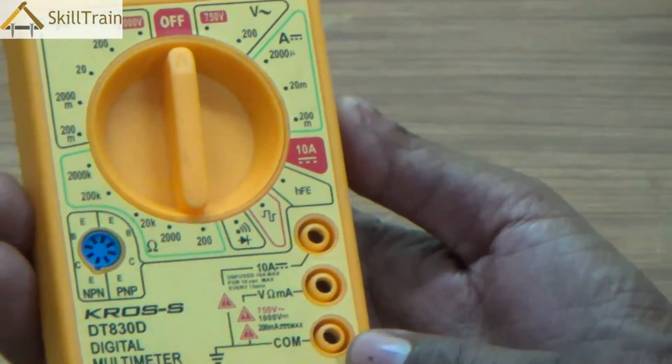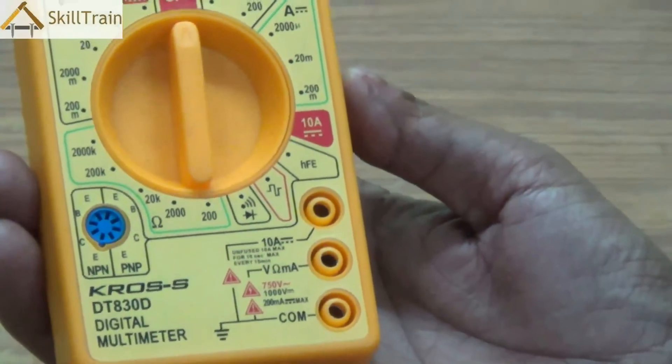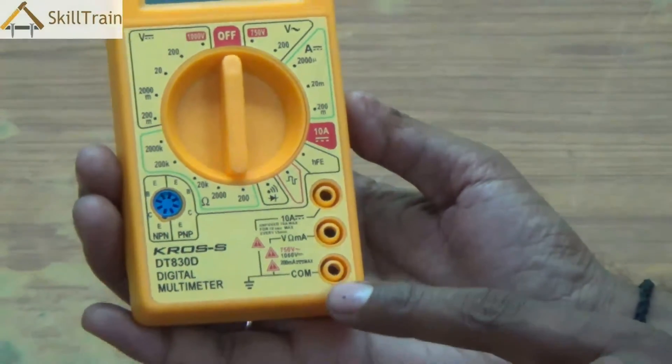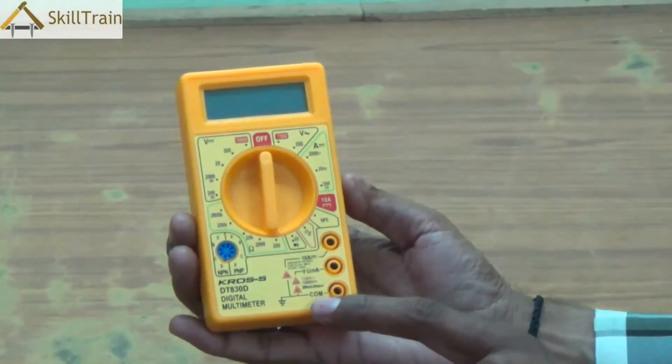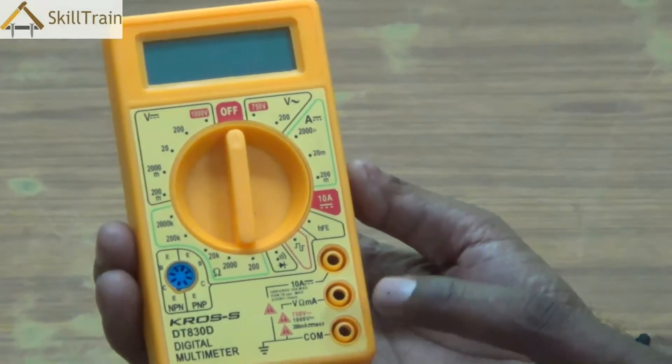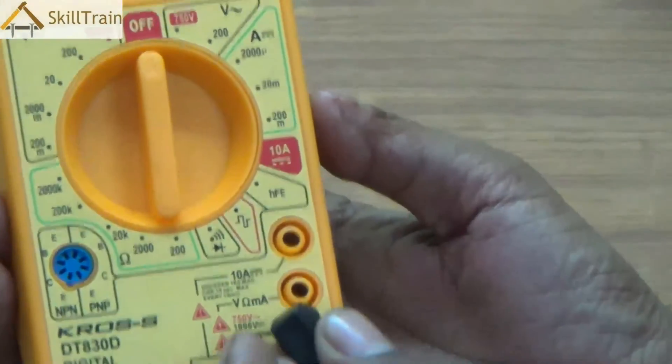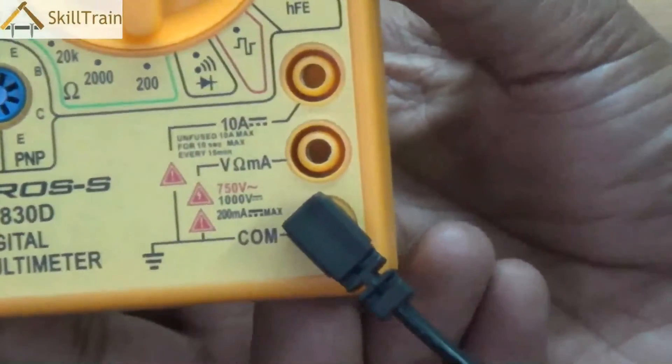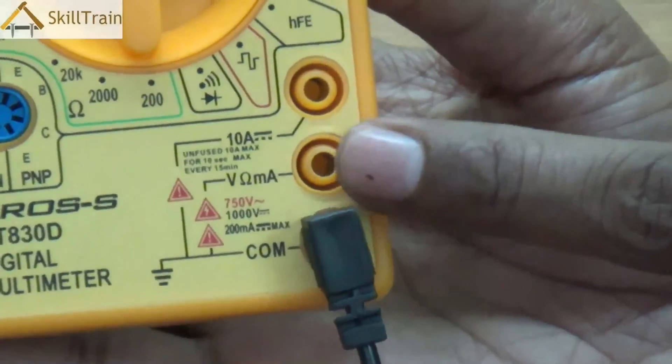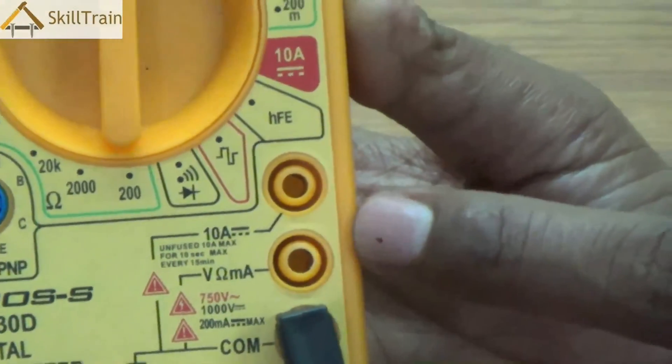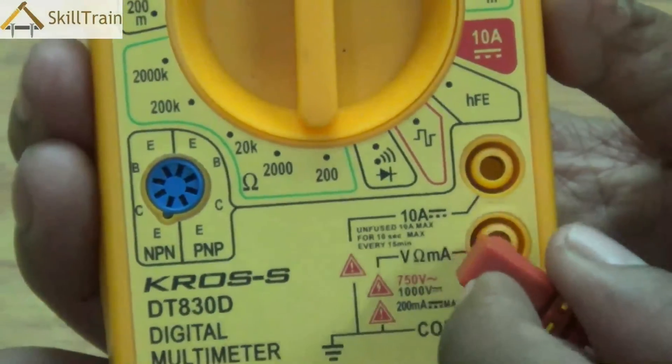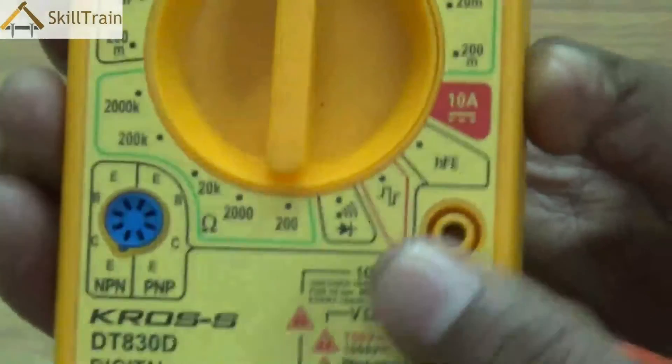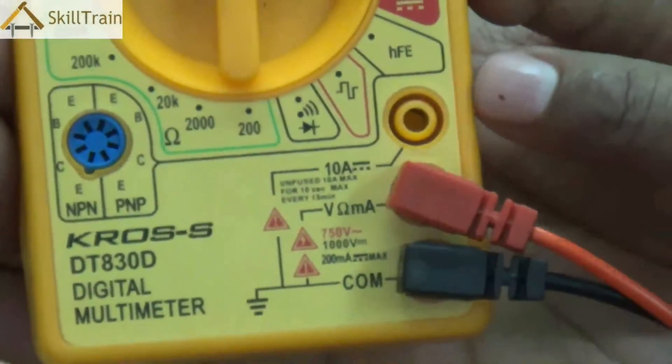Now the first one is the black probe. The black probe has to be placed at a point where it is written as COM, which basically signifies a common range. Place it there and press it and it will fit in tightly. Right above that you will see a symbol where it is written as voltage ampere MA. This is where you take readings of voltage, ampere, etcetera, and you place the red probe here.